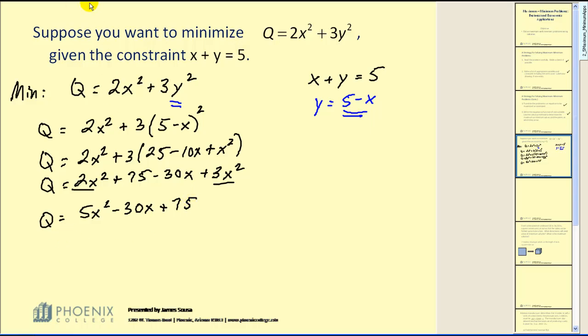If we want to minimize this, what we need to do is find the first derivative, set it equal to zero, and find our critical numbers. So if we set this equal to zero and solve, we can see that x equals 3. This is where a maximum or minimum may occur.